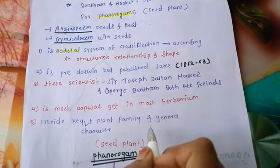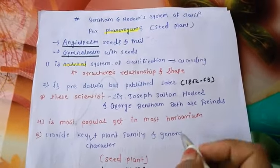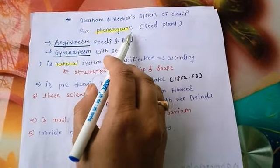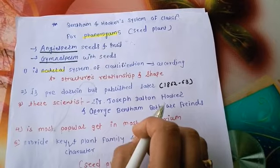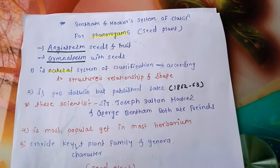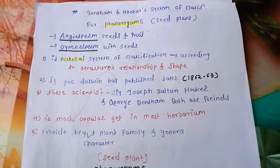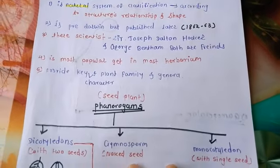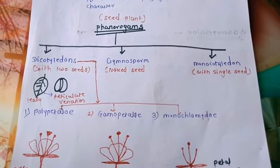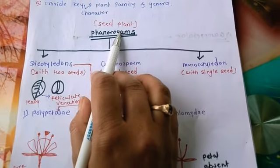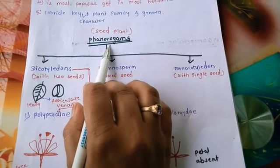This system is very popular and widely used. Sir Joseph Dalton Hooker and George Bentham were both friends. Together they worked on the classification of Phanerogams, which means seed plants — plants that produce flowers and seeds.